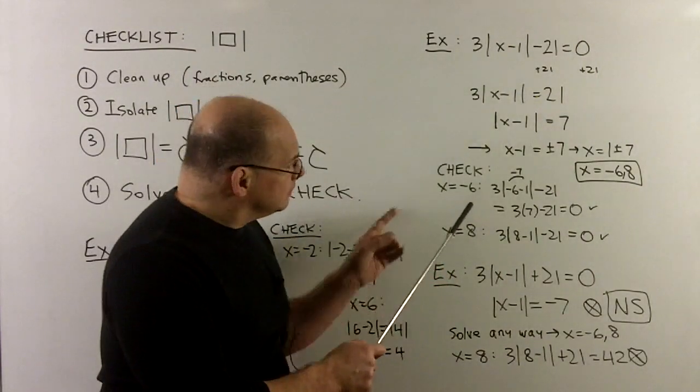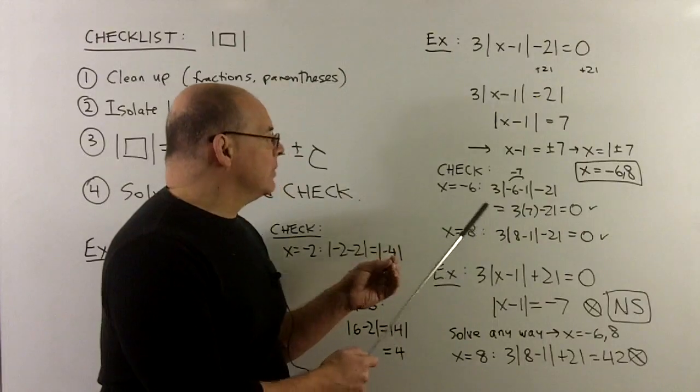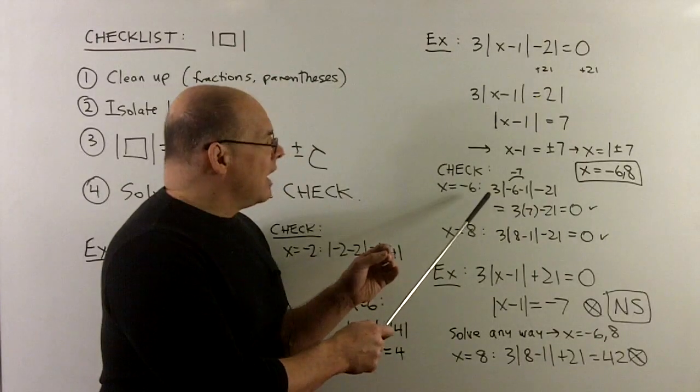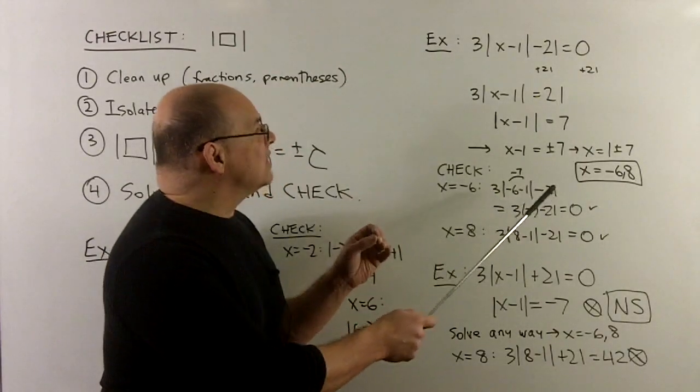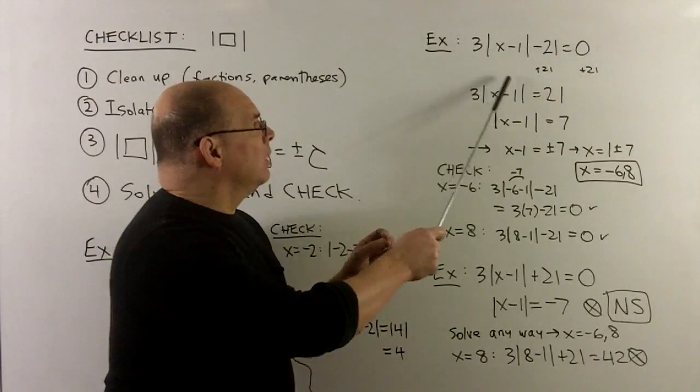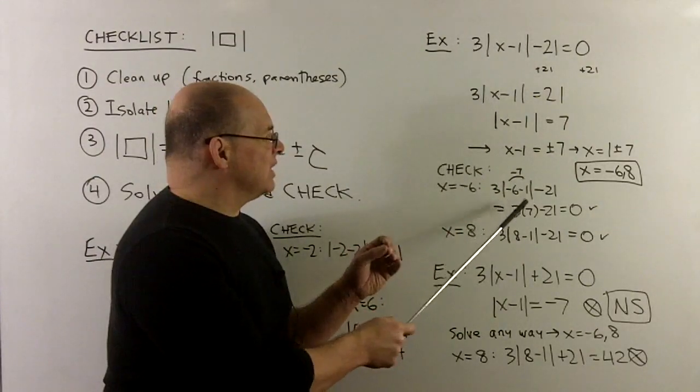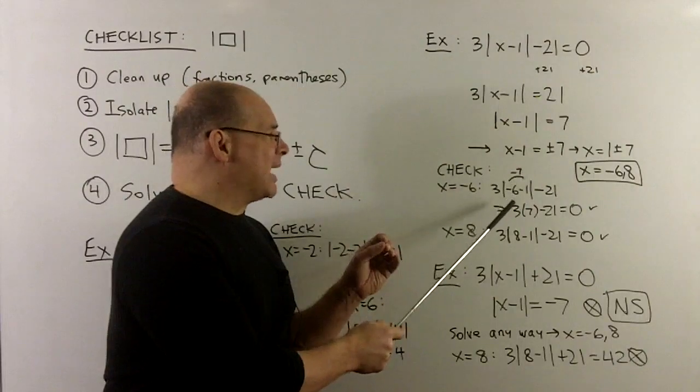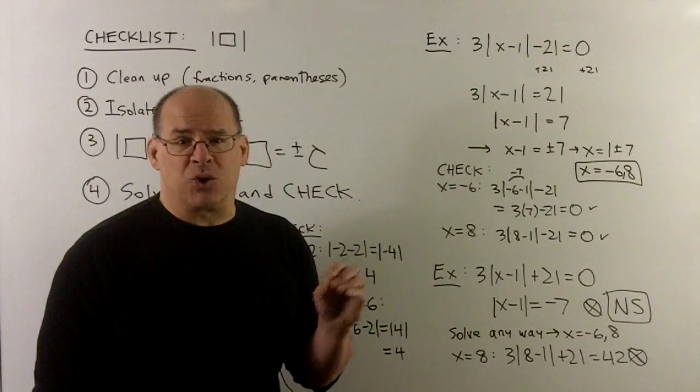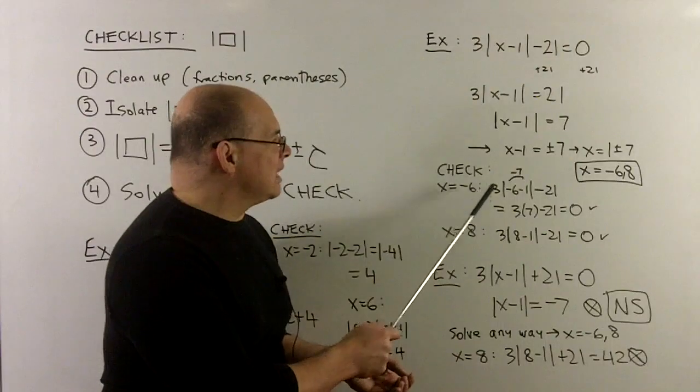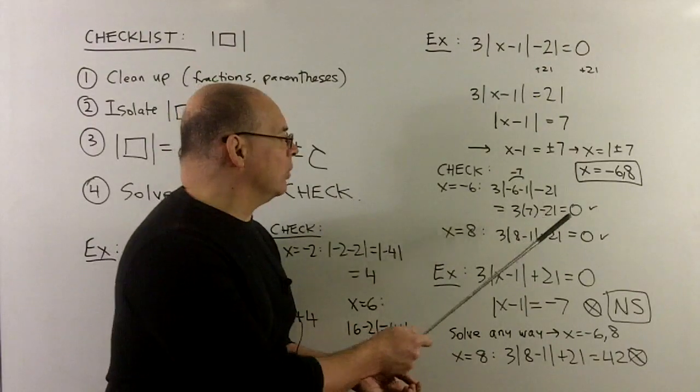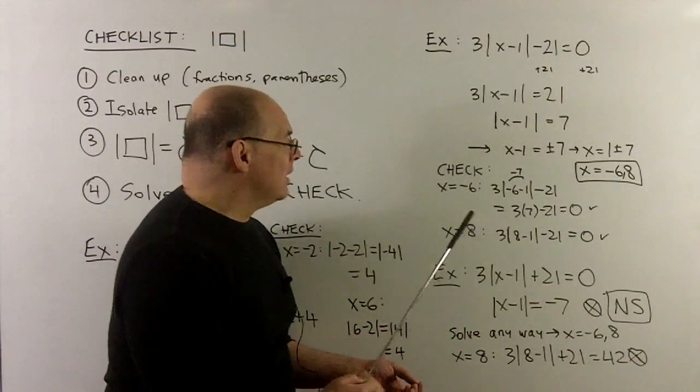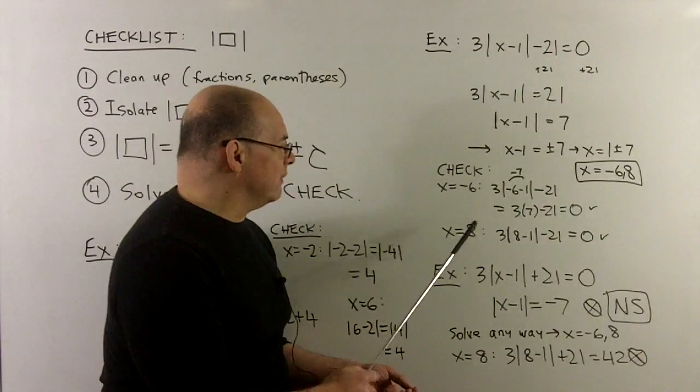Of course, we check both answers. So we'll check the negative 1. I have, we put minus 6 into this expression. So that's a minus 6 minus 1. That's a minus 7. We take the absolute value that goes to 7 by dropping the sign. And then 3 times 7 is a 21 minus 21 is 0. Likewise, for the solution of 8.